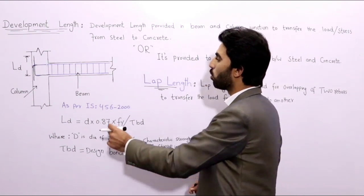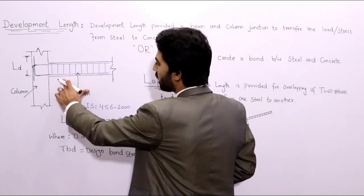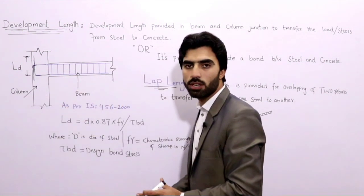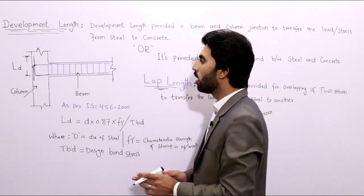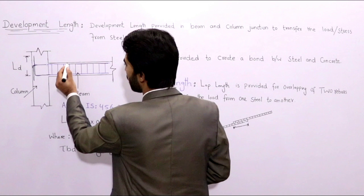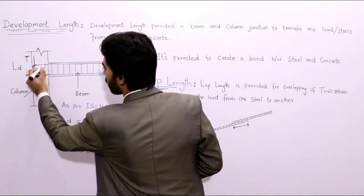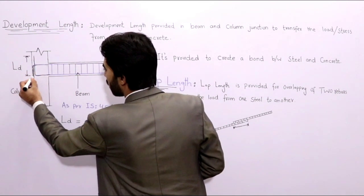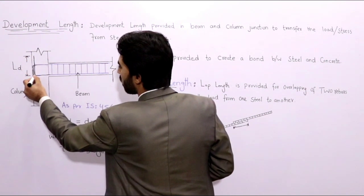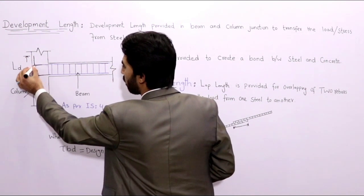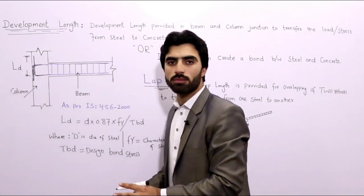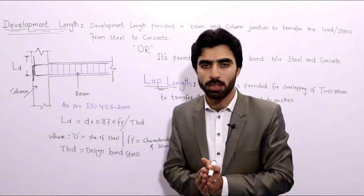Here is a diagram for development length. The horizontal section is the beam and the vertical section is the column. These are the main bars — you can see them here. This portion is called development length. This is the upper band and this is the lower band — it is called development length.